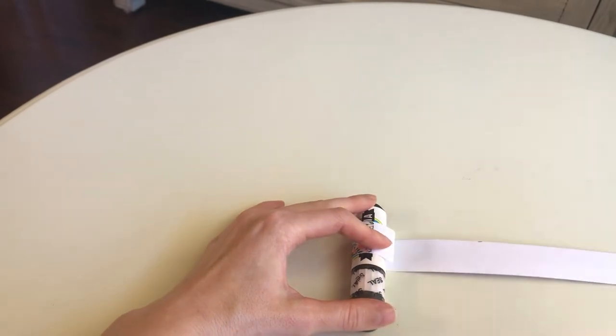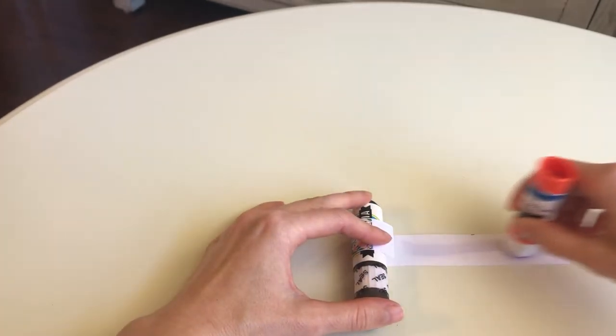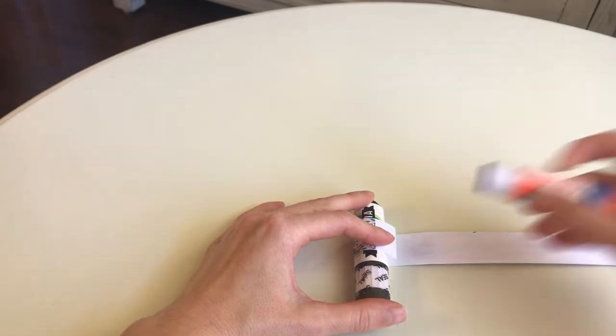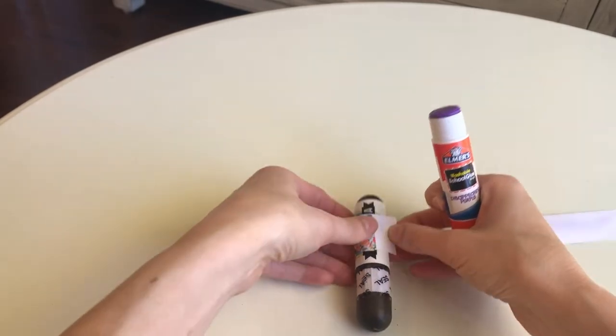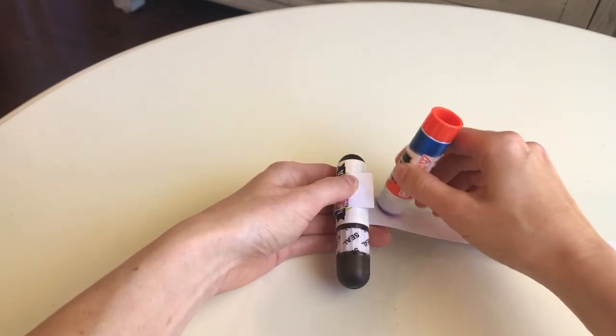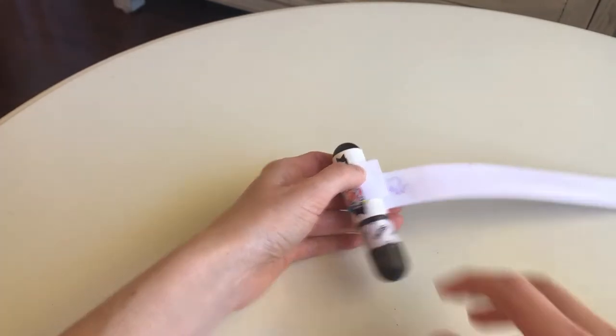You're going to take your glue and coat the backside of the paper. Also be sure that you don't get glue too close to the chapstick because then it will stick to the chapstick and not the paper.